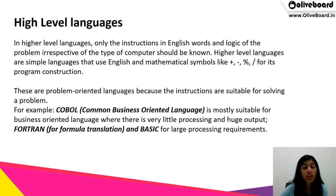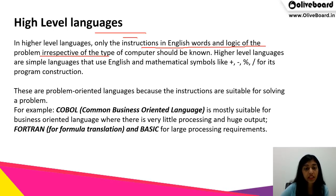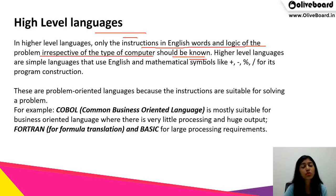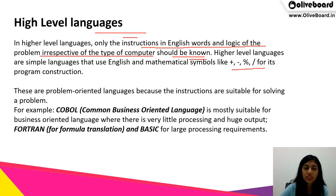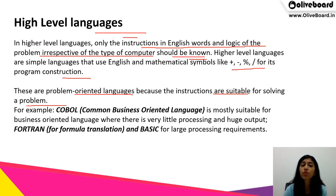The next type of computer language is high level language. Here, only the instructions in English words and the logic of the problem — irrespective of the type of computer — need to be known. High level languages are simple languages that use English or mathematical symbols like plus, minus, percentages, or division for program construction. These are problem-oriented languages because instructions are suitable for solving a specific problem.